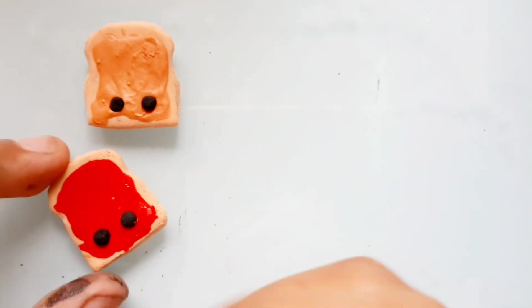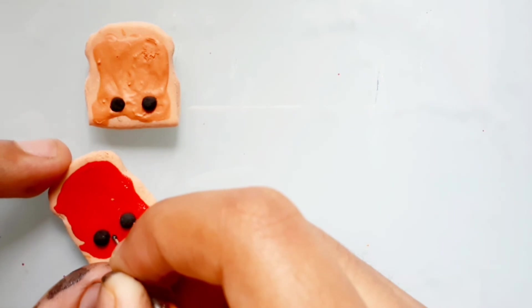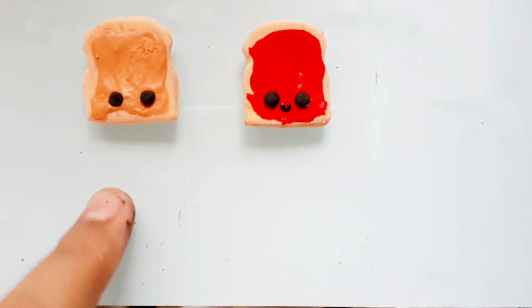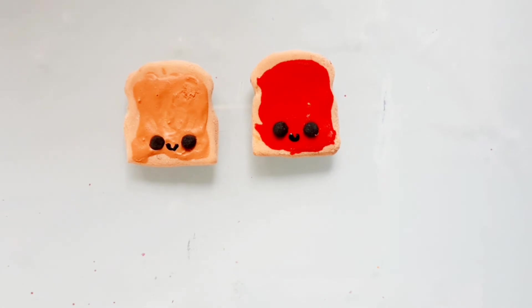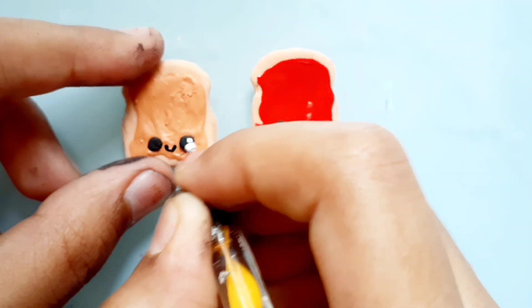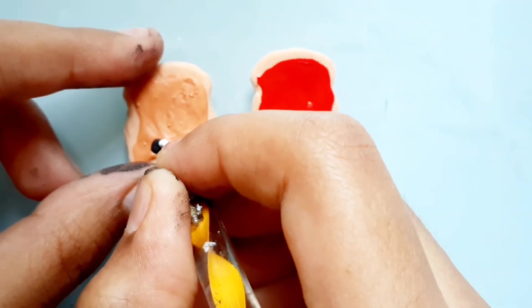Now take your dotting tool and make a U-shape for the mouth for both the slices. Next, take some white color and put two small dots on each of the eyes for extra cuteness.